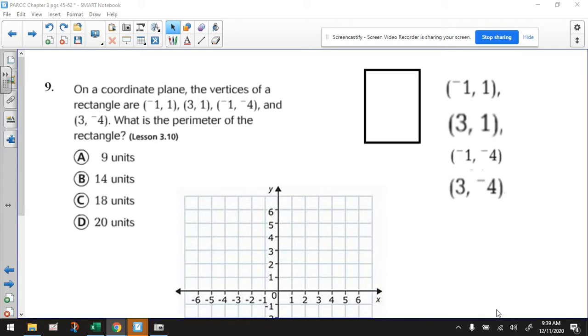It says, on a coordinate plane, the vertices of a rectangle are, and then they give them to you here. Now what I like to do sometimes is actually write them out like this. Why? Because it might help you to identify horizontal lines and vertical lines.